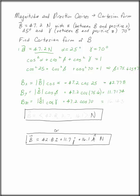Now remember, you want to always answer your question with units and three significant digits. So B in Cartesian form is 42.8, 11.7, and 16.1 Newtons.